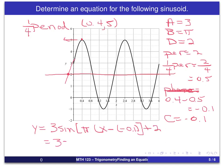Or, again, we would usually write that as 3 times sine of π times x plus 0.1 plus 2.